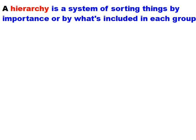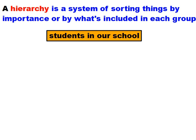Well, this. A hierarchy is a system of sorting things, either by importance or by what's included in each group. So if we wanted to create a hierarchy of the kids in our school, it would look something like this. There's our first category, which happens to be the largest category, all the students in our school.